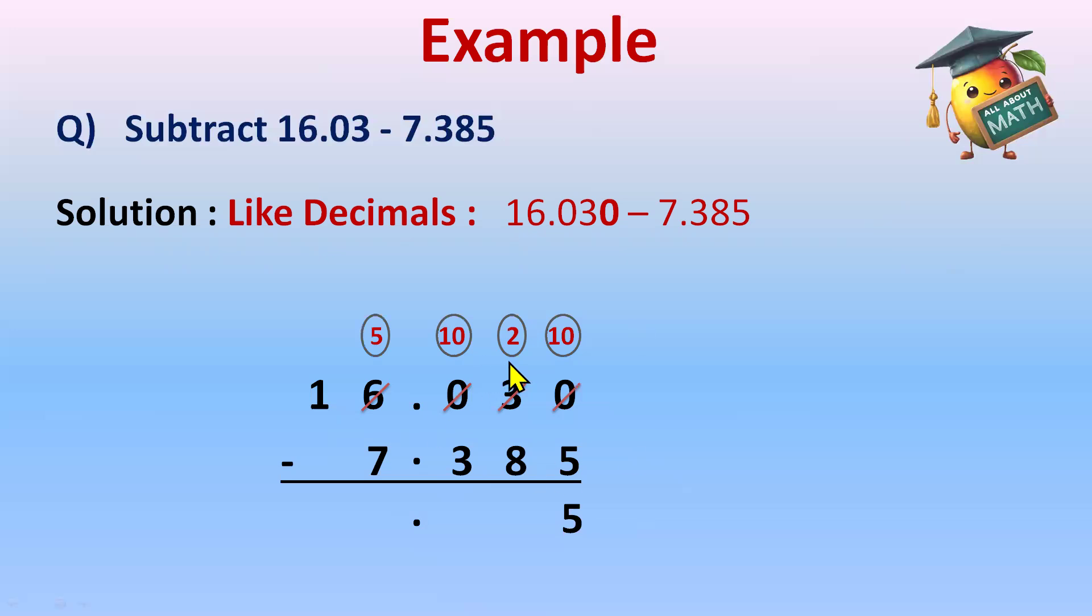6 will become 5. And now this 2 will take 1 from 10 and it will become 9, and this will become 12. So now 12 minus 8 is possible. 12 minus 8 is 4. So our answer here is 4.